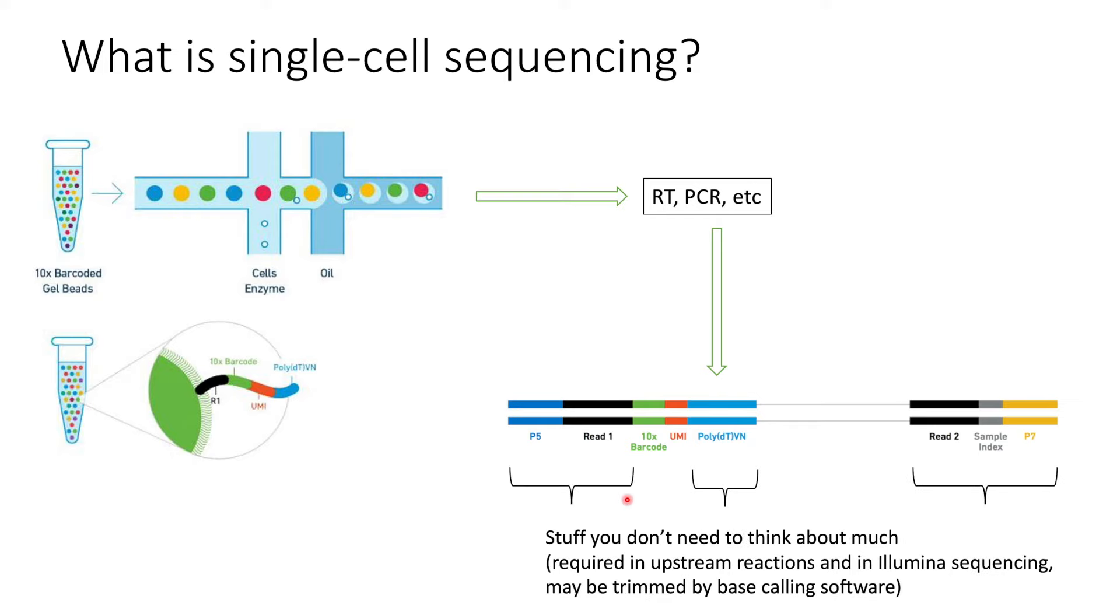So you really only care about these two parts and then your sequence. The rest is just stuff you really don't need to think about much. So in the end, you have a bunch of reads with cell barcodes, molecular barcodes, and you can tell which cells they came from.